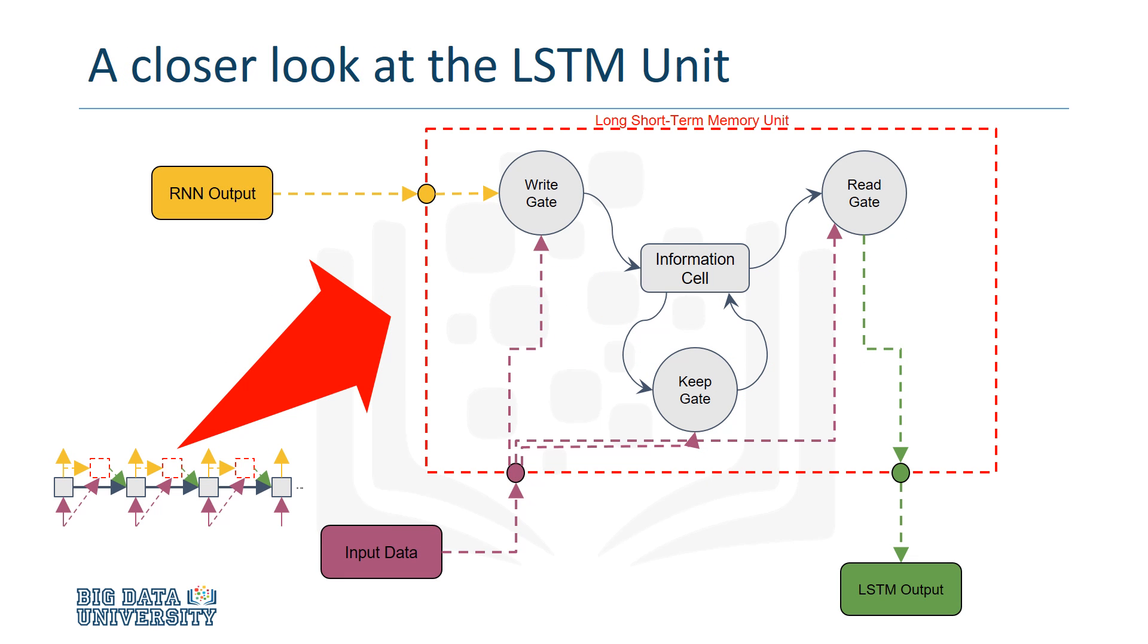Let's take a closer look at an LSTM unit's structure. The data input and the network's state are directly connected to all the gates. So each gate receives the same information as the recurrent net's processing cell. Additionally, the network's output is connected to the write gate, and the read gate is connected to the network's processing cell. The write gate sends its output to the information cell, and the information cell can send data into the read gate.